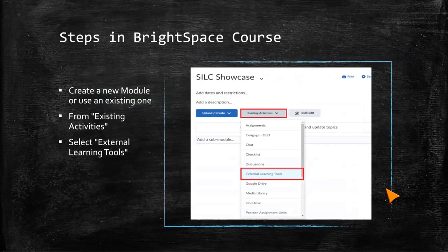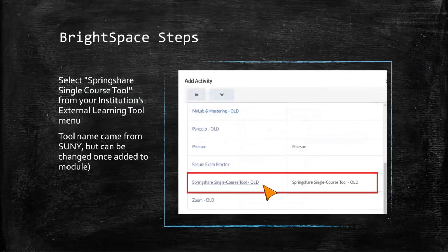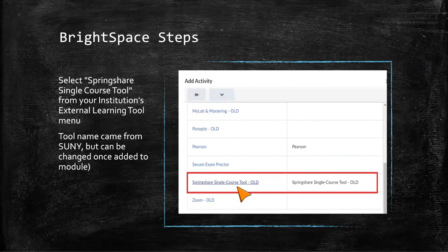This is within the options in Brightspace. When we had this with Blackboard it was in a different area — it was under creating course content. In Brightspace, you find it under external learning tools. A pop-up window shows all of our institution's external learning tools — things like MyMathLab, Turnitin, Zoom, and our library tool. The SpringShare LTI will likely appear with a similar naming convention to your institution.